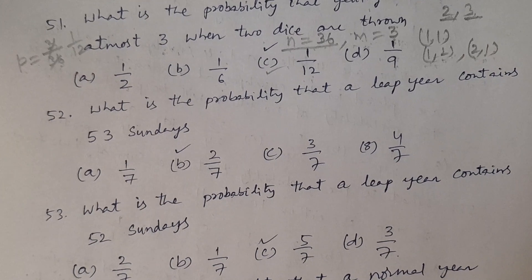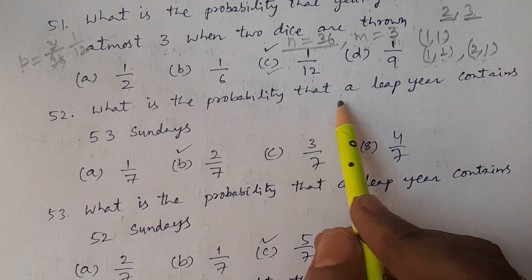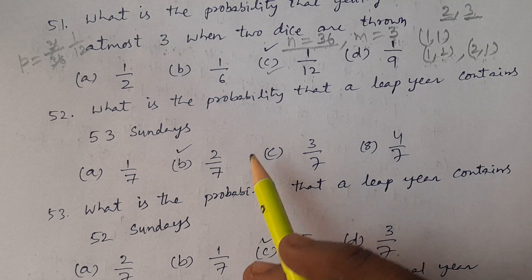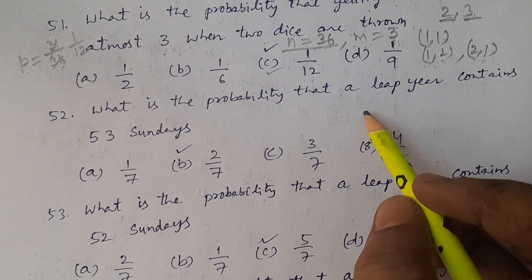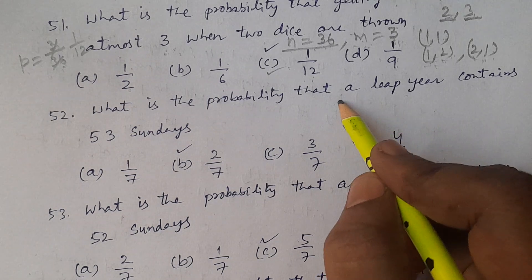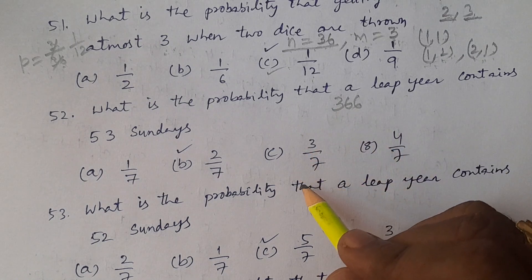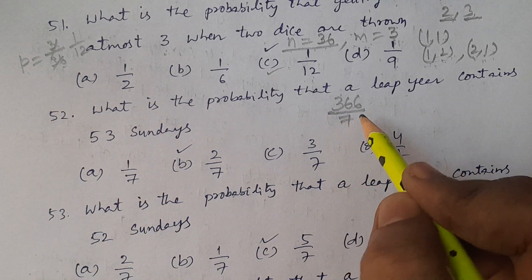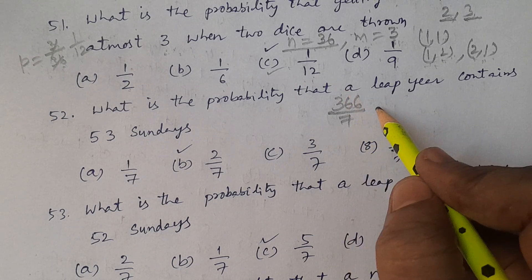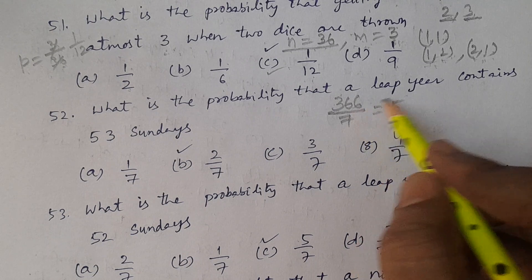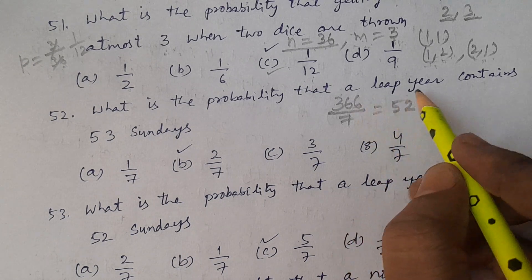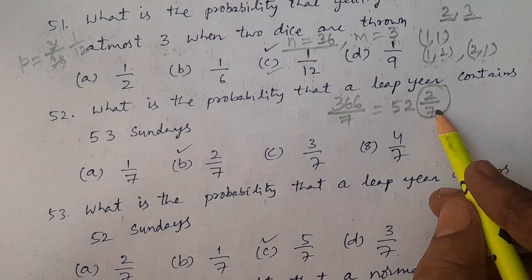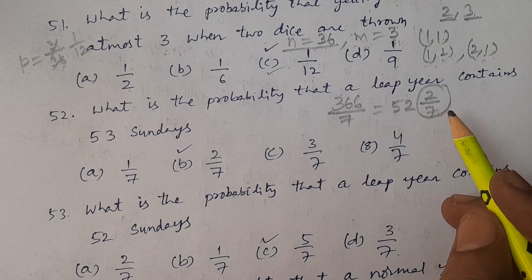Question number 52: What is the probability that a leap year contains 53 Sundays? A leap year has 366 days. Dividing by 7 gives 52 weeks with 2 days remaining. So there are only 2 possibilities for the answer: 2/7 or 5/7, depending on the question.